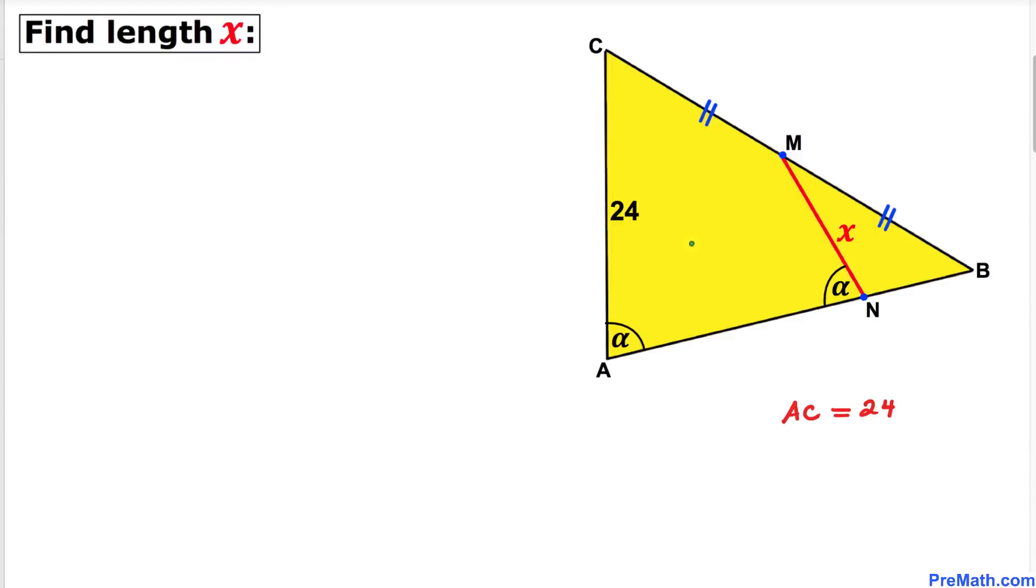Welcome to ProMath. In this video tutorial, we have triangle ABC such that line segment CM equals line segment MB, side AC is 24 units, and angle A is alpha.